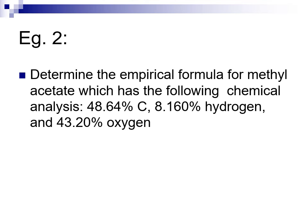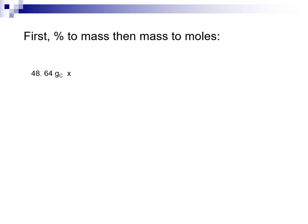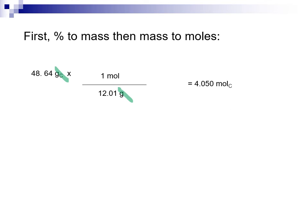Let's try one where it doesn't work out quite so cleanly. Empirical formula for methyl acetate — what's given are percentages: percent carbon, percent hydrogen, and percent oxygen. So we have three elements. The process: percent to mass, mass to moles, divide by small, multiply till whole if needed. With a 100-gram sample, each percentage becomes grams: 48.64 grams of carbon.